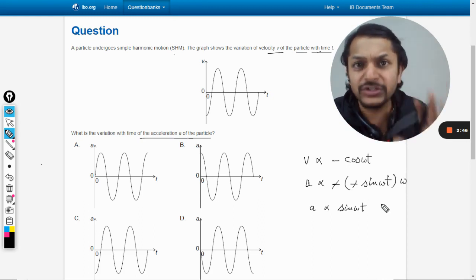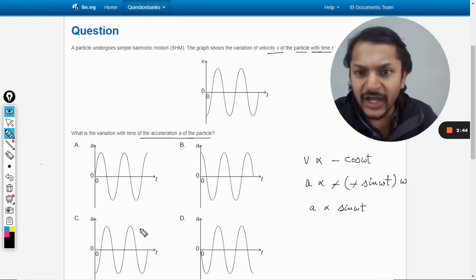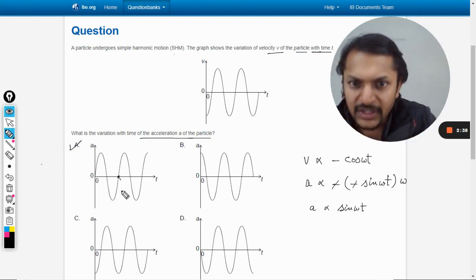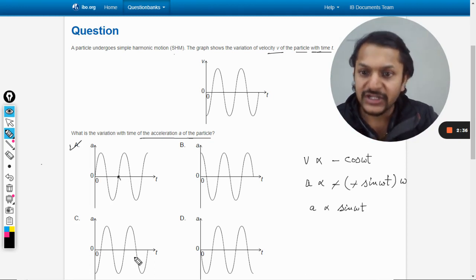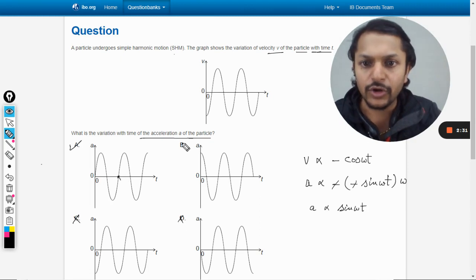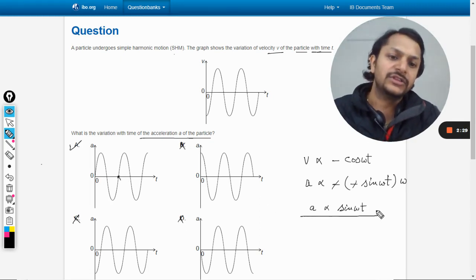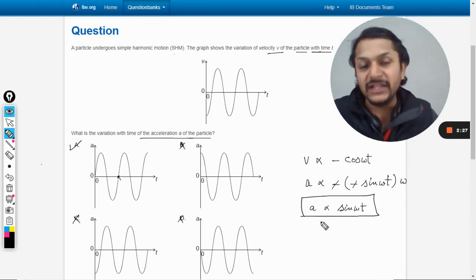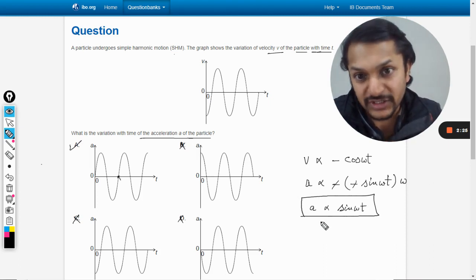It will be clearly a positive sine variation, and out of these graphs only and only A is giving you the positive sine variation. This is positive sine variation, this is positive cos, this is negative cos, and this is negative sine. So all of these become wrong. This is the only method that I believe we can use here.